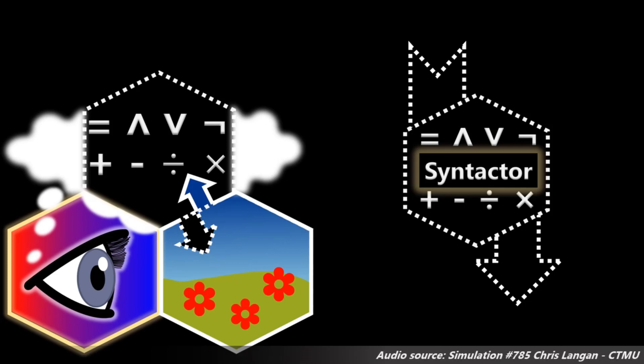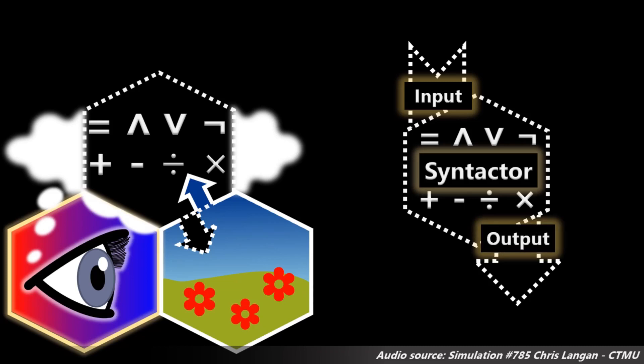The universe is quantized in terms of things called syntactors that can actually accept input from the universe and then return output in the forms of state transitions or behavior.